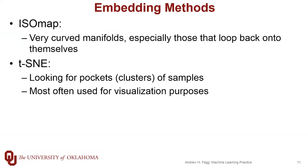Isomap actually uses multidimensional scaling. It's all about detecting very curved manifolds, and in particular it's good at dealing with manifolds that loop back onto themselves or skim very close to themselves. It was Isomap that made use of the geodesic distance metric. Finally, we spent some time looking at stochastic neighbor embedding, which is about trying to find pockets or clusters of samples in the original dataset.